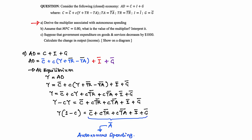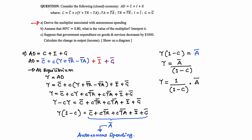We can rewrite at equilibrium: Y times (1 minus C) equals A-bar, all autonomous spending. Making Y the subject, we have Y equals A-bar divided by (1 minus C), which we can rewrite as Y equals 1 over (1 minus C) multiplied by autonomous spending. This means a change in Y divided by a change in any autonomous spending equals 1 over (1 minus C). Thus, 1 over (1 minus C) is the multiplier.